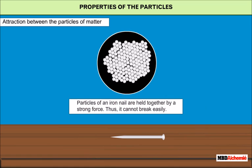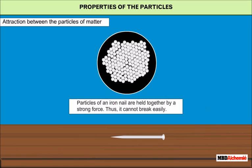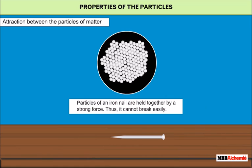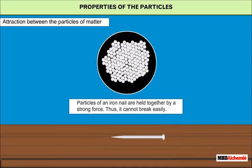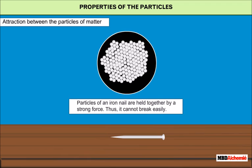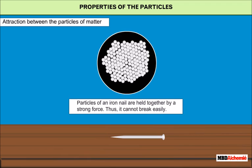We may infer that the forces of attraction between the iron particles are very strong. Thus we may say that the particles of matter attract each other and the power of attraction varies from one type of matter to the other.